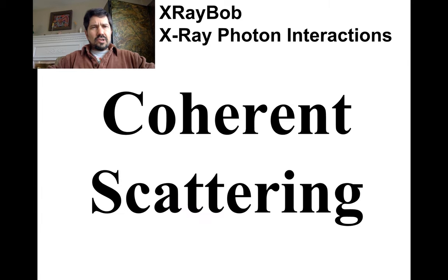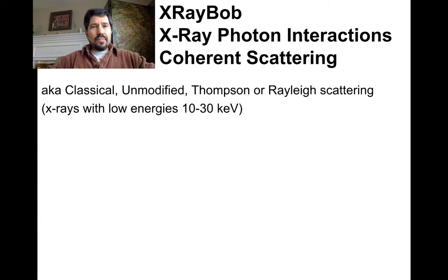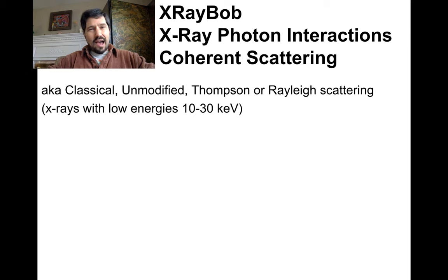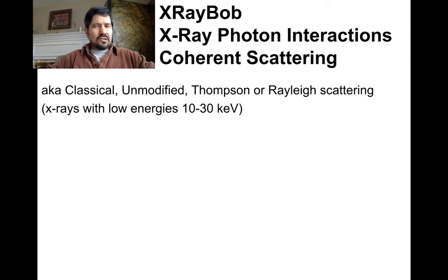We'll start with coherent scattering, which also goes by the name of classical scattering, unmodified scattering, Thomson, or Rayleigh scattering. Unmodified because the wavelength won't get modified. This is low energy stuff — x-rays down at 10 to 30 keV, stuff we're trying to filter out anyway.